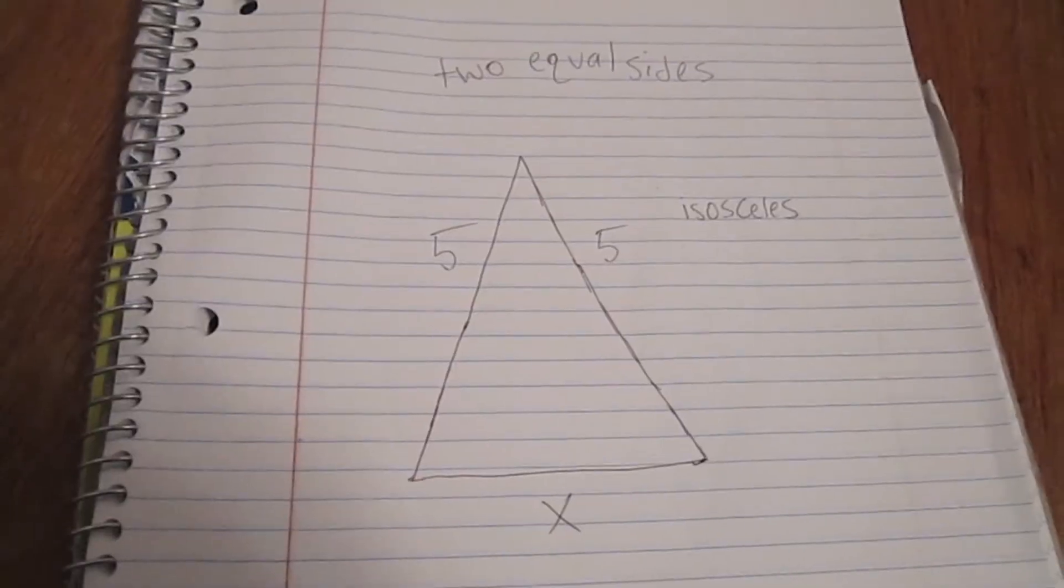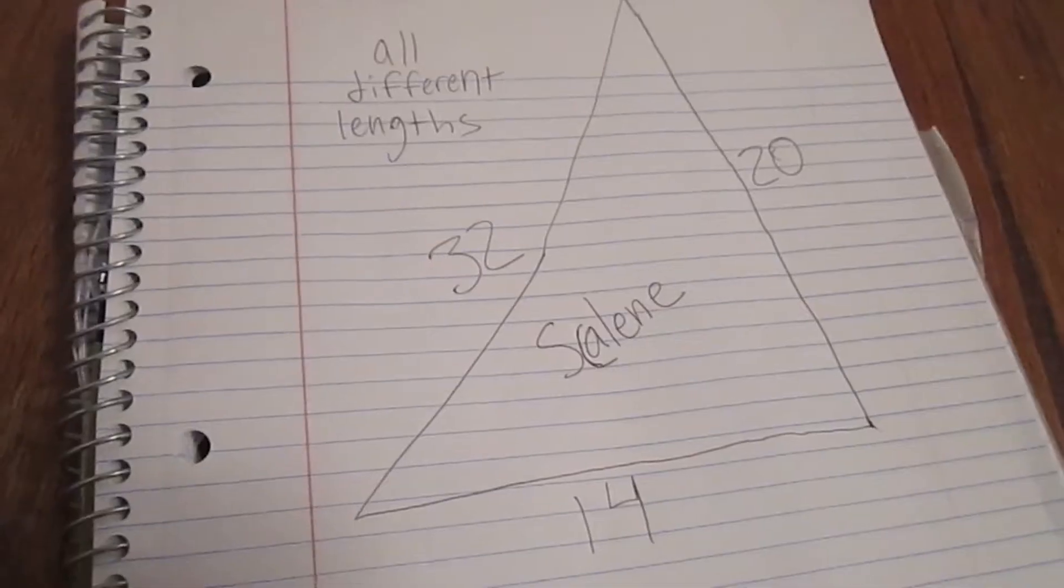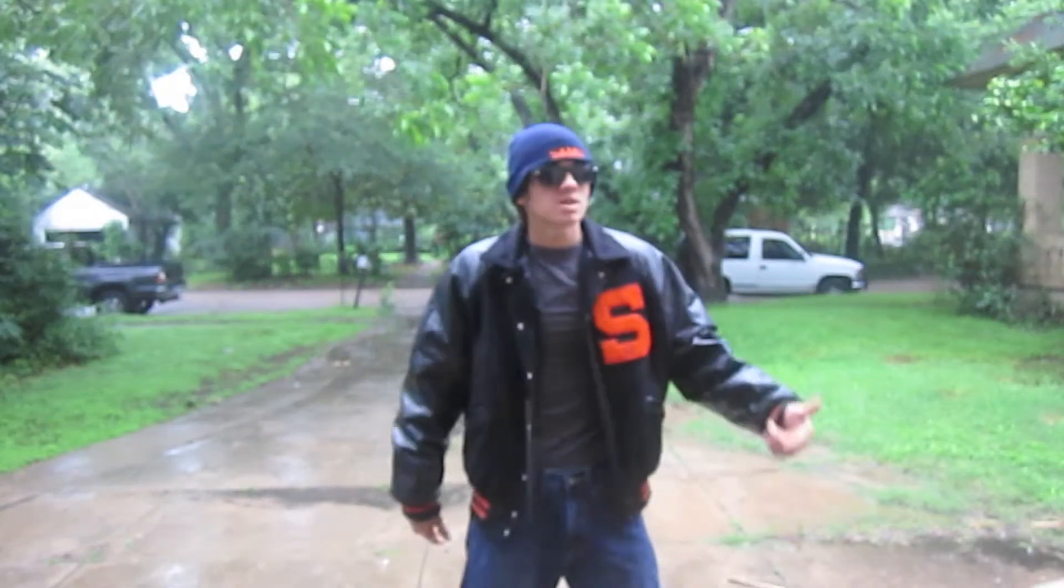Have you ever seen isosceles, acute obtuse, maybe scalene? Weir's triangles, they're so obscene. If I could talk to them, I'd think we'd all see. We're doing these problems so pointlessly.